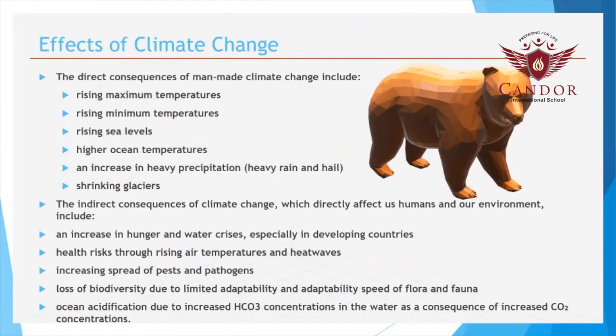Climate change causes a variety of physical impacts on the climate system. The physical impacts foremost include globally rising temperatures of the lower atmosphere, the land and oceans. The direct impacts are rising maximum and minimum temperatures and shrinking glaciers. The indirect impacts of climate change are health risks due to heat waves and ocean acidification due to increased CO2 levels.